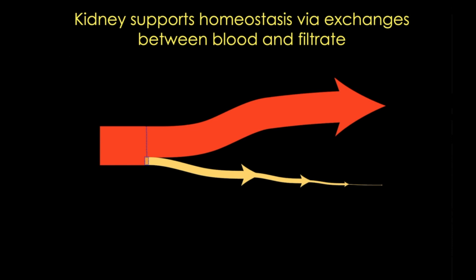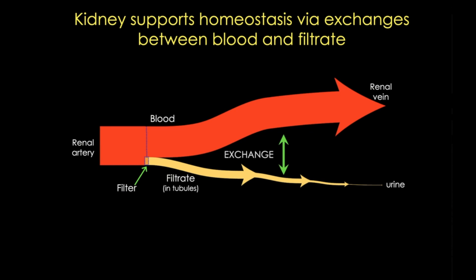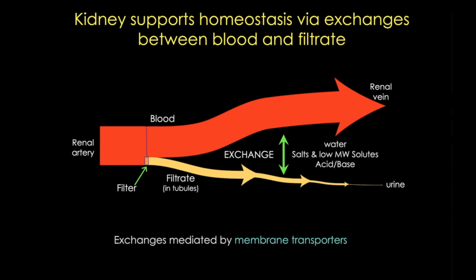The kidney is basically an exchanger. In this cartoon you can see the blood system on top and the kidney tubules, which carry first filtrate and then urine out of the body, in yellow on the bottom. The first step is a blood filter, and then there are a bunch of exchanges that occur between the blood and the filtrate, where water, salts, acids, and bases are transported back and forth by membrane transporters as needed to adjust blood chemistry.